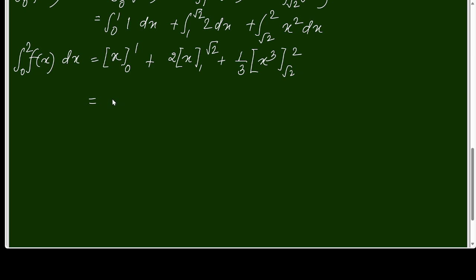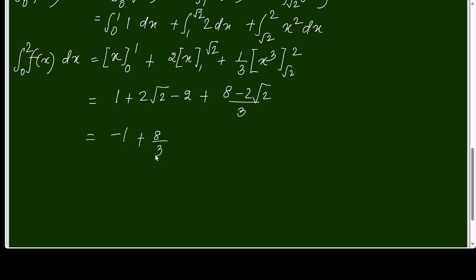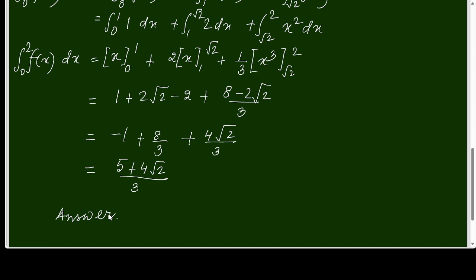Computing: this equals 1 plus (2√2 minus 2) plus (8 minus 2√2) over 3. Simplifying, the total is negative 1 plus 8 over 3 plus 4√2 over 3, which gives (5 plus 4√2) over 3. So this is the answer. Thank you for watching.